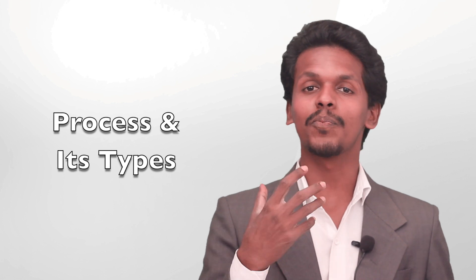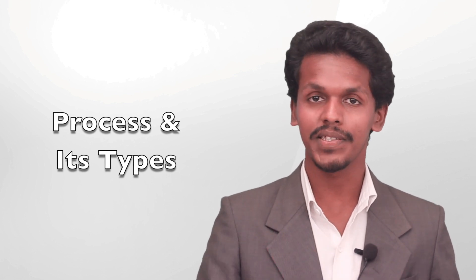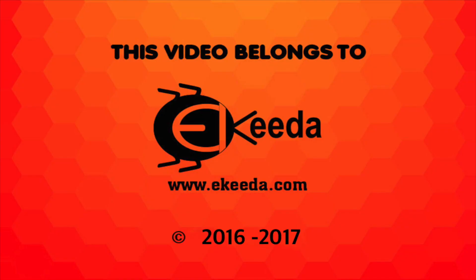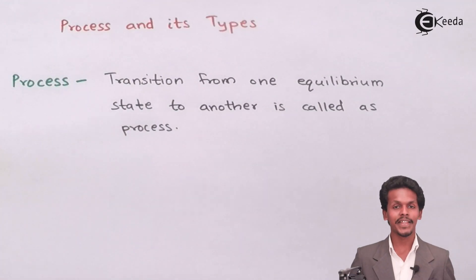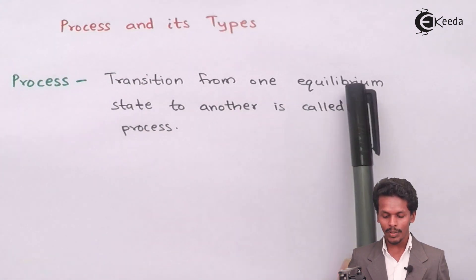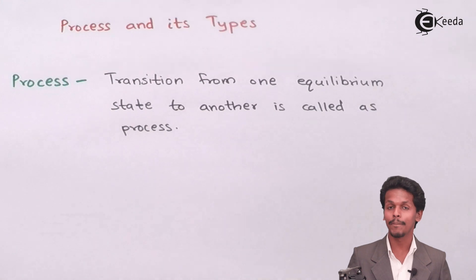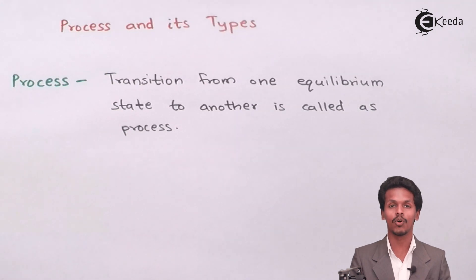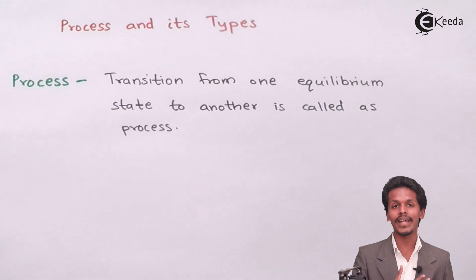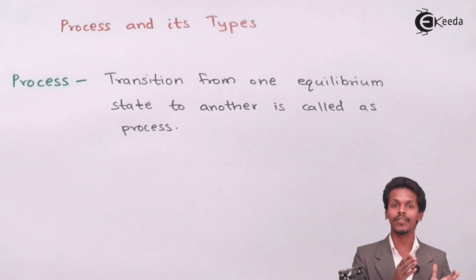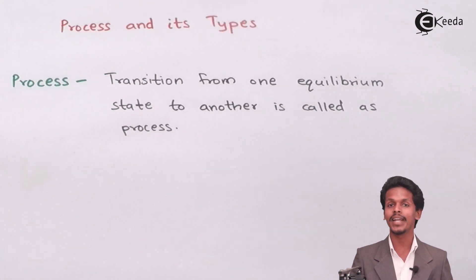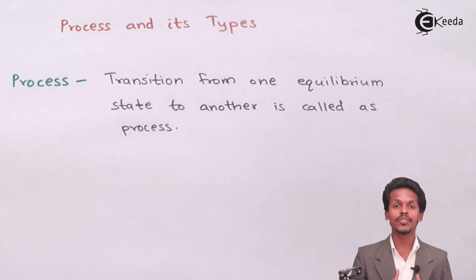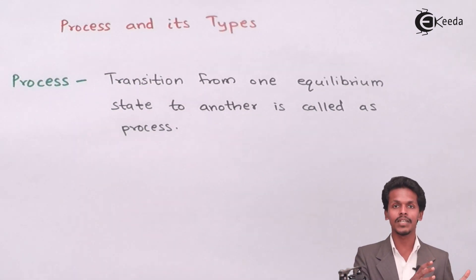Now we are going to talk about what is a process and what are the types based on the process. A process is nothing but any transition from one equilibrium state to another equilibrium state. It is basically the change from one form to another form. There are also many factors that depend in the process — pressure, volume, and temperature. We can also make a particular state function remain constant while transforming from one equilibrium state to another.